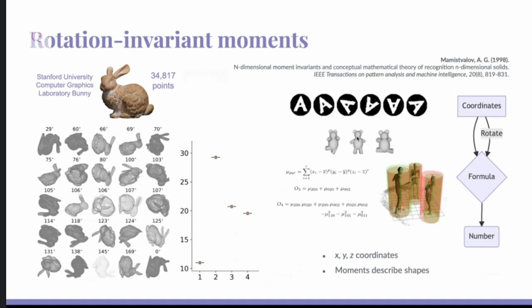So this is a concept from the field of computer vision, where they use it for things like character recognition and pose recognition and so on. Essentially, this is a mathematical formula that you feed in a set of coordinates through this formula, and it gives you a number. But if you rotate this coordinate and feed it through the same formula, you get the same number.